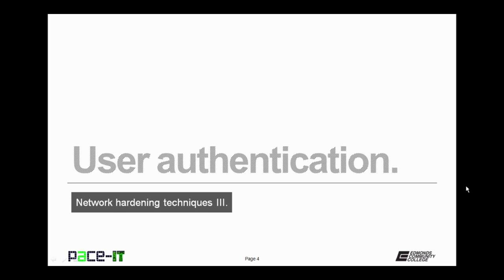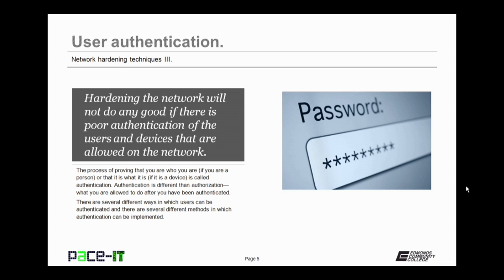I'm going to start by talking about user authentication. Hardening the network will not do you any good if there is poor authentication of the users and devices that are allowed on the network. The process of proving that you are who you say you are, if you are a person, or that you are what you say you are, if it's a device, is called authentication. Authentication is different than authorization. Authorization is what you are allowed to do after you have been authenticated. There are several different ways in which users can be authenticated, and several different methods in which authentication can be implemented.